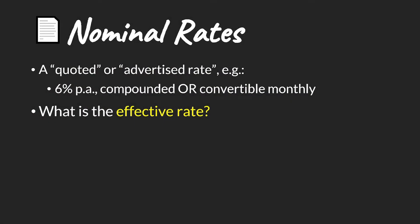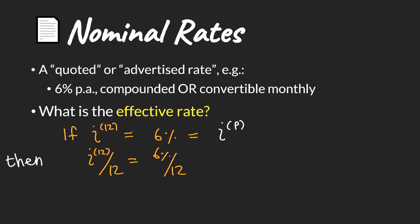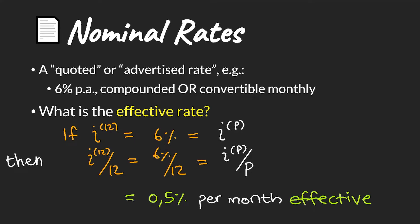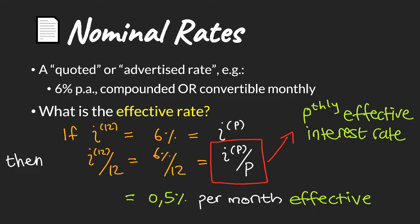What's important here is our notation. We use i^(p) to denote our nominal interest rate, and the p is telling us that there are p interest payments in our measurement period. We are really interested in effective rates because we need to use them in our calculations. So if we've got a nominal rate of 6% per annum, then our nominal rate divided by p, or 12, will give us our effective rate pthly — that is, the effective rate per month. You take your i^(p) and divide it by p, and now you've got an effective rate per month.